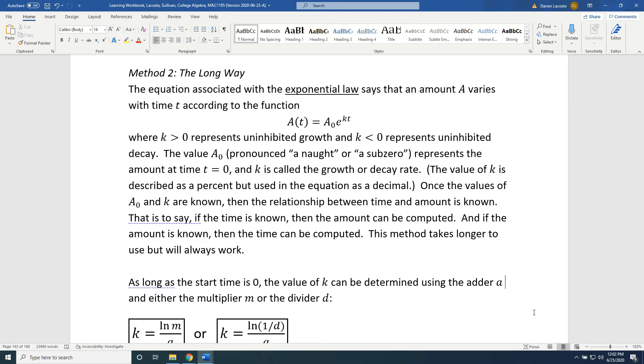The equation associated with the exponential law says that an amount A varies with time t according to the function A(t) = A₀e^(kt), where k > 0 represents uninhibited growth, and k < 0 represents uninhibited decay. The value A₀ represents the amount at time t = 0, and k is called the growth or decay rate.